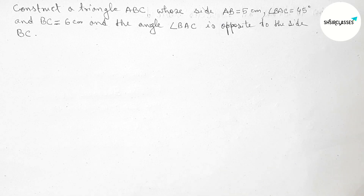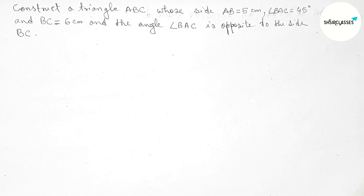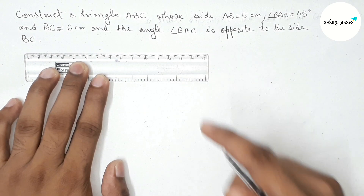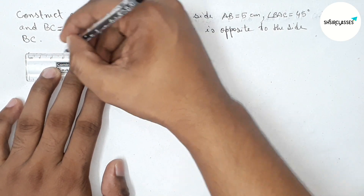Hi everyone, welcome to SAE Share Classes. Today in this video we construct a triangle ABC whose sides are AB equal 5 centimeter, angle BAC 45 degrees, and side BC 6 centimeter. The angle BAC is opposite to the side BC. So let's start the video.